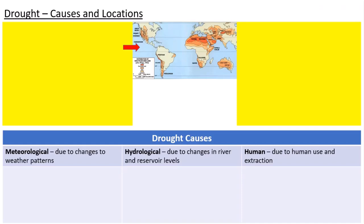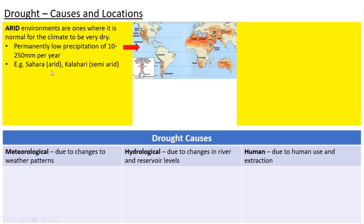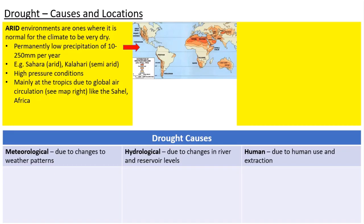Moving on to drought. First, drought is not necessarily the same as just being very dry. Arid environments or dry places are where it is very normal for the climate to be dry — as shown on this map of the world's desert areas. The Sahara in North Africa, the Patagonian Desert in South America, the Namib and Kalahari — these receive very little rainfall, but that is very normal for them. They relate back to our Hadley cells where sinking air occurs, with permanently low precipitation of less than 250 millimetres per year.